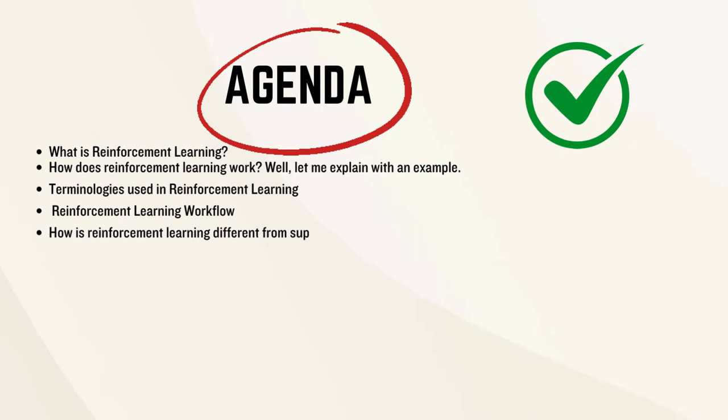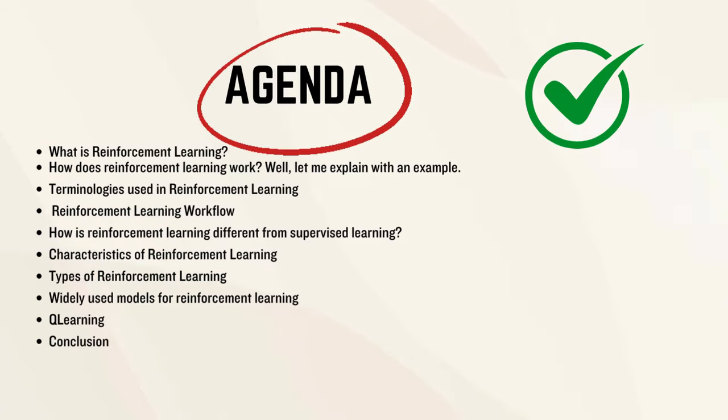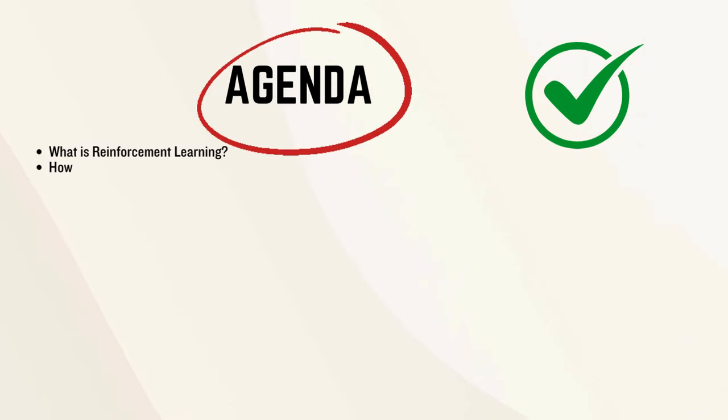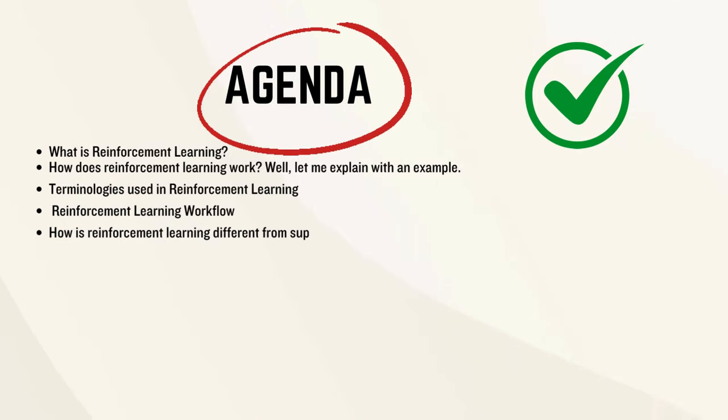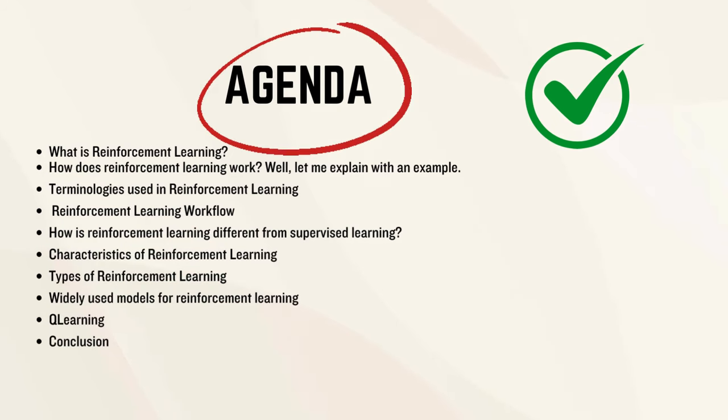How does reinforcement learning work? Terminologies used in RL. Benefits and challenges of RL. How is reinforcement learning different from supervised learning? Characteristics and types of reinforcement learning. Widely used models for reinforcement learning. What is Q-learning and final conclusion?